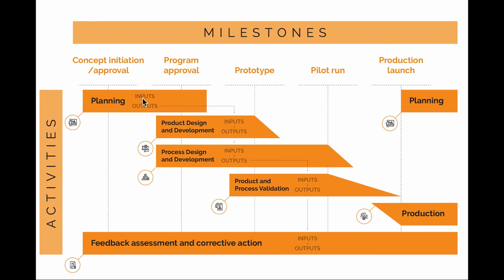Then you get into validation, which takes the outputs of design and development. You'll do pilot runs — typically several, not just one — to show that you can produce at the right pace. For a new car, you need to demonstrate you can supply enough parts for the automotive assembly plant, because if you can't, they'll shut down and it will cost an enormous amount of money. Capacity is extremely important — quality and capacity work hand in hand.